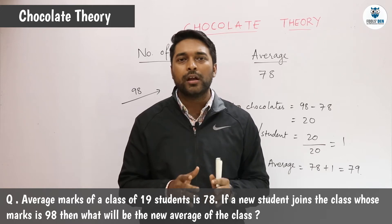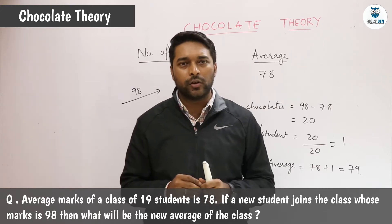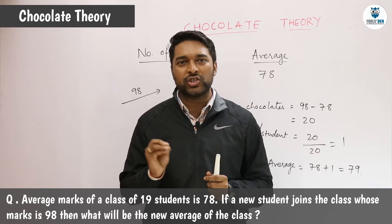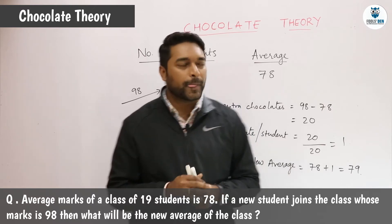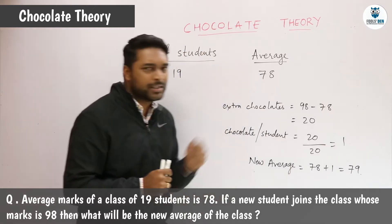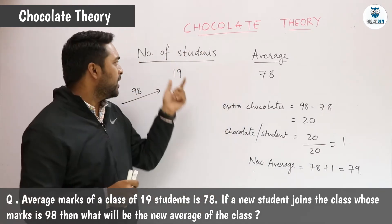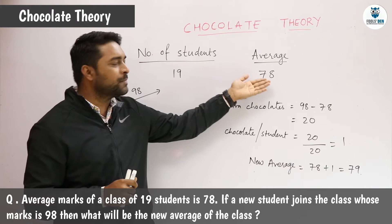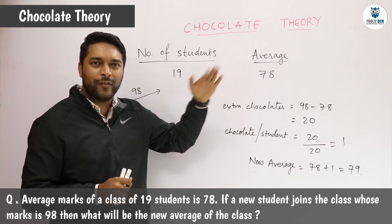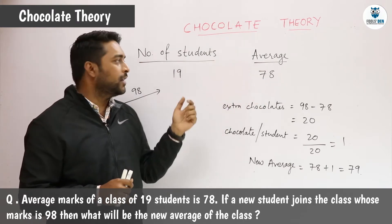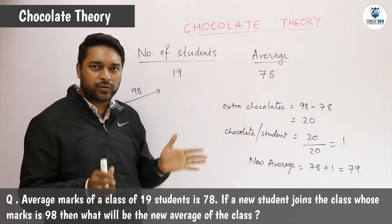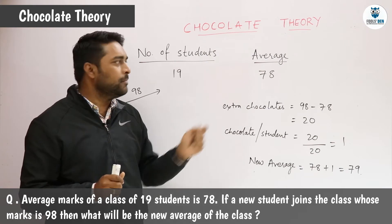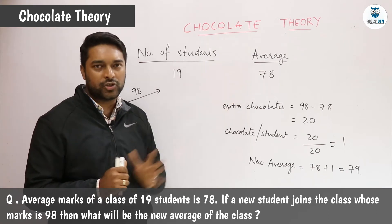To solve this question using chocolate theory, we will consider marks as chocolates. The question states that there are 19 students and their average marks is 78. That means we will consider that there are 19 students in a class and each of them has 78 chocolates.